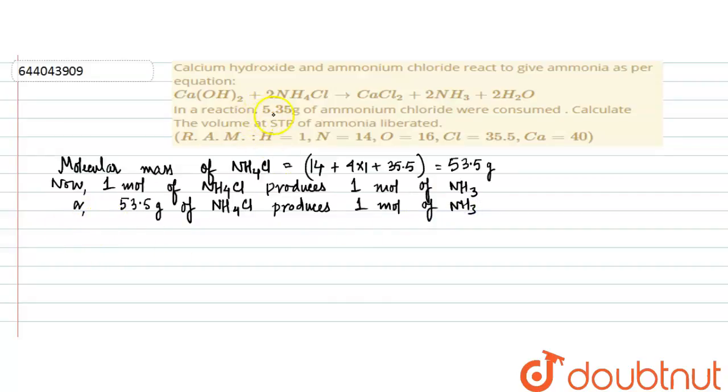Now in the reaction it is given that 5.35 gram of ammonium chloride are consumed. 5.35 gram of NH4Cl will produce 0.1 mole of NH3.